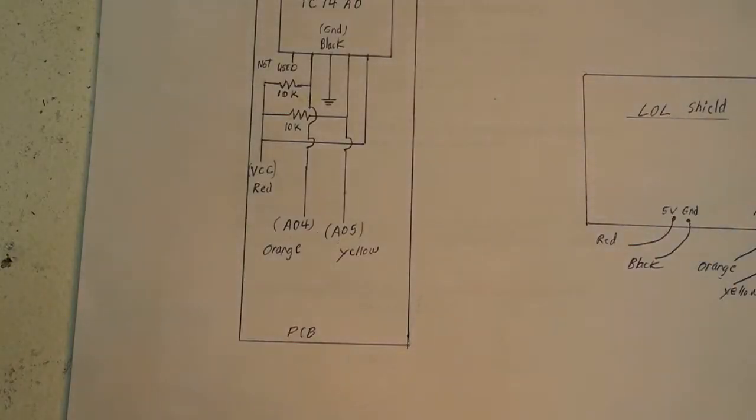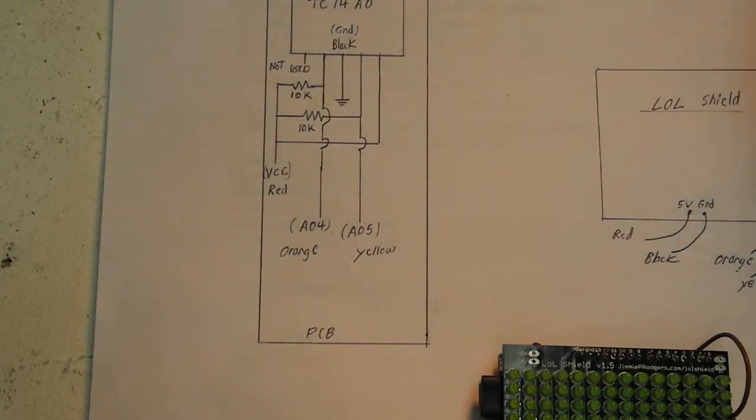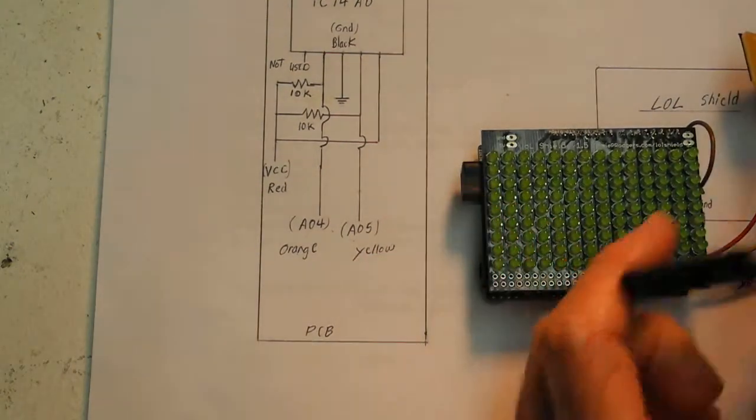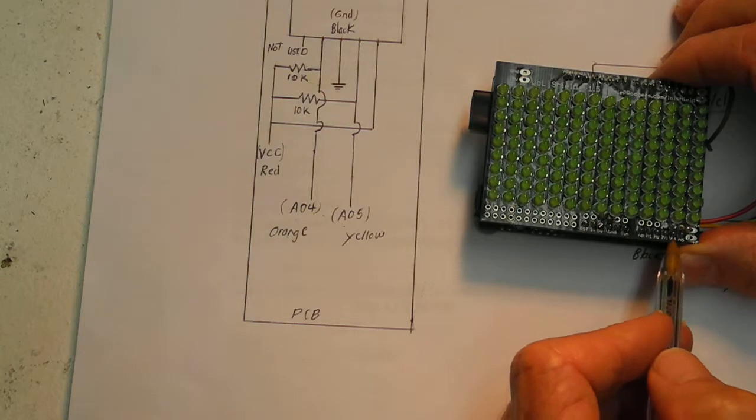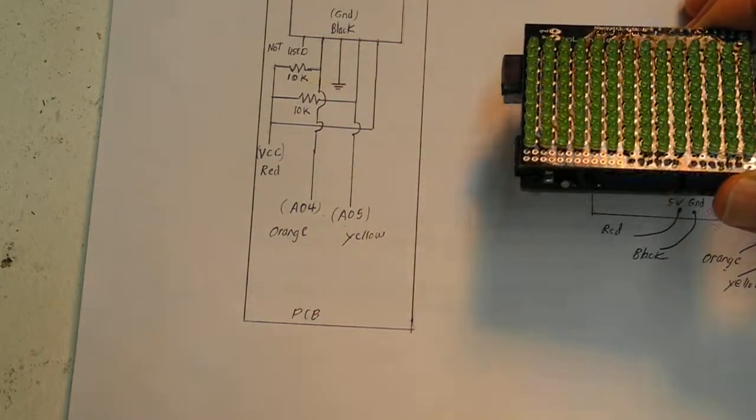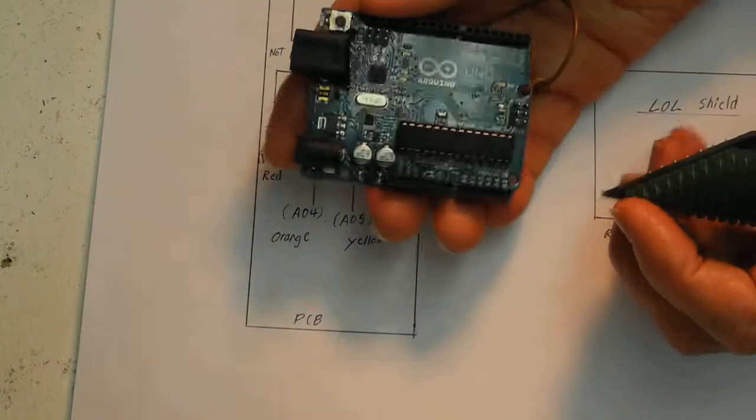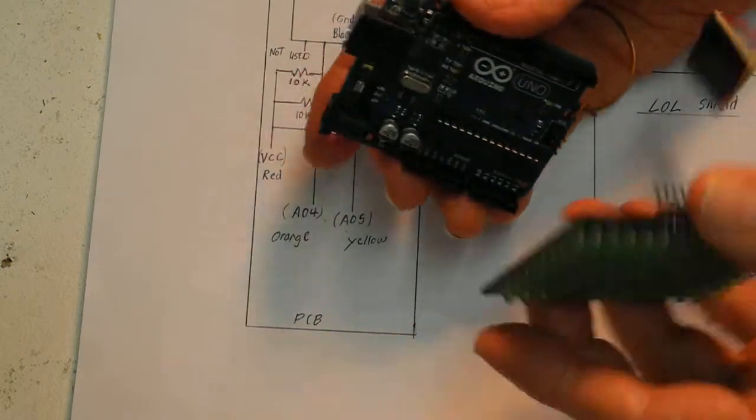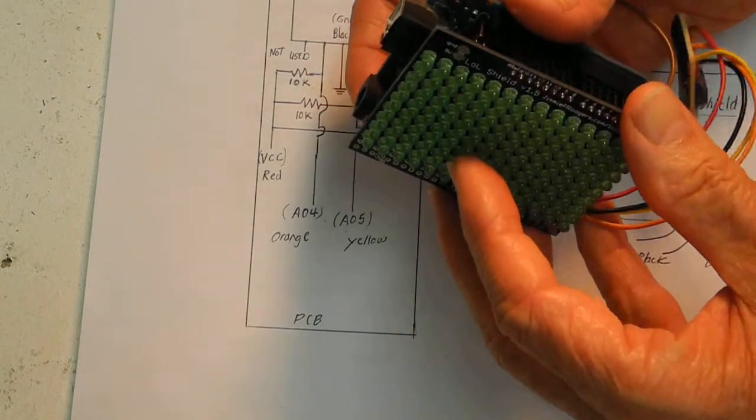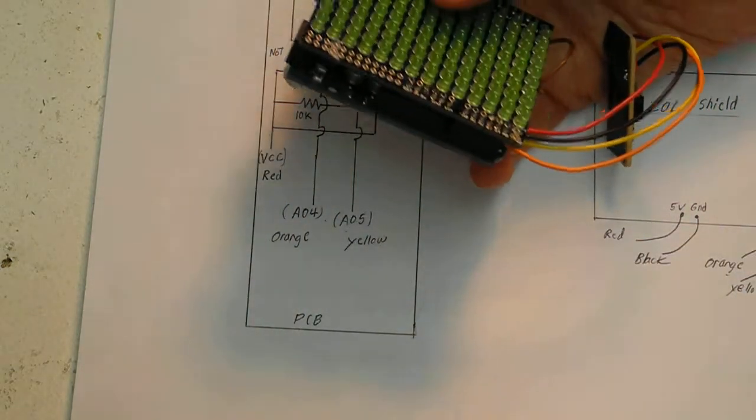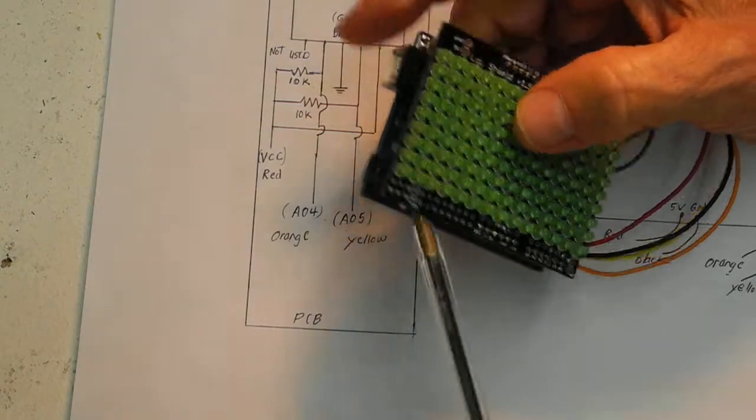That goes over here to the shield which is right here. And the shield has 5 volt connection here, ground and then analog 4 and analog 5. This shield is mounted on an Arduino Uno and it just connects like this. And here, here's the power jack for a wall plug. Nine volts. That's what I use.